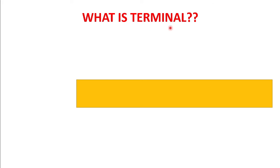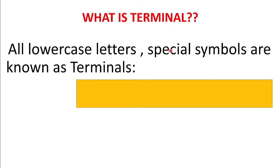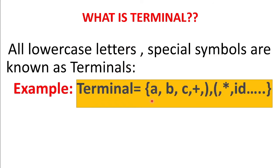Now we'll see what a terminal is. All lowercase letters, special symbols — other than uppercase letters, anything else is known as a terminal. Examples include a, b, c, plus, closing parenthesis, opening parenthesis, multiplication sign, ID, etc. So all of those become terminals. Other than capital letters, anything is considered a terminal.